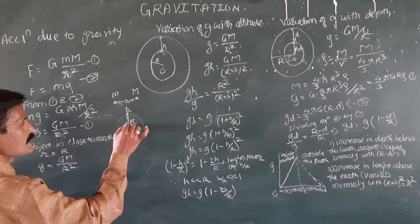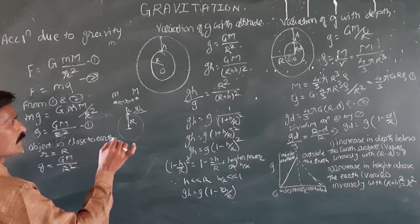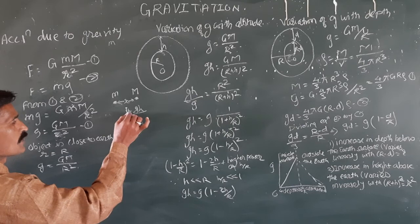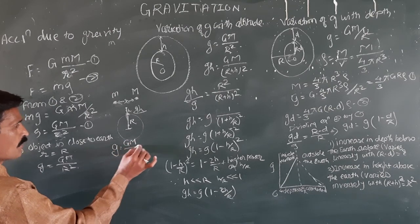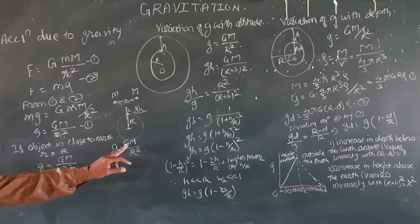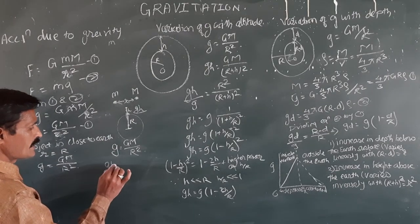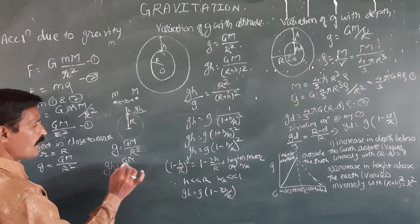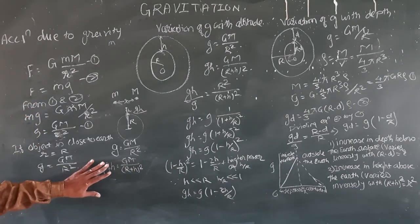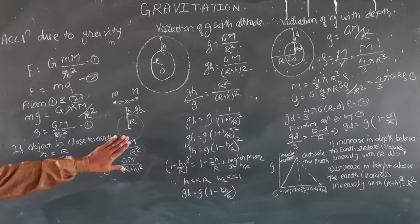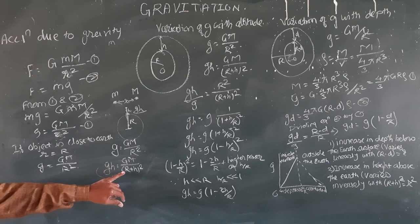At the center, the acceleration due to gravity is considered. When an object is on or close to the surface of the earth, the acceleration due to gravity G is equal to GM upon R square. At a height h above the surface, the acceleration due to gravity g_h is equal to GM upon (R plus h) square.